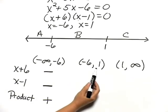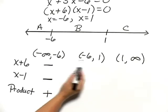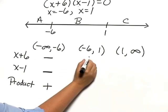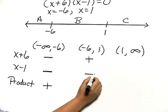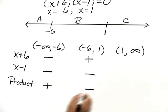For x between negative 6 and 1, for example, if x were 0, then this factor would be positive. This factor would be negative. And their product would be negative.